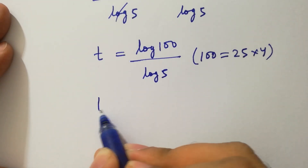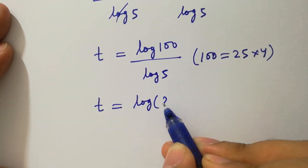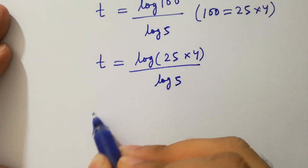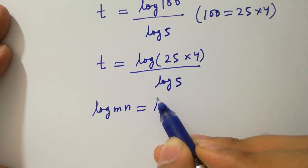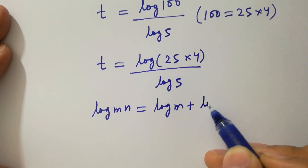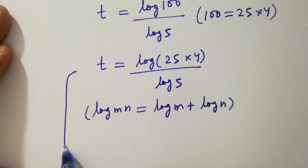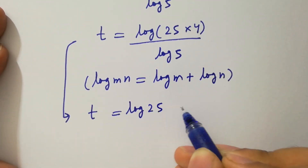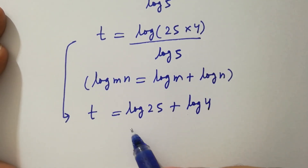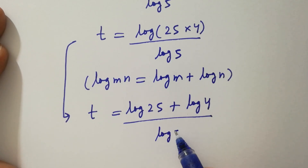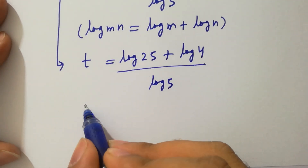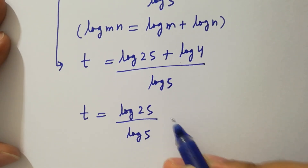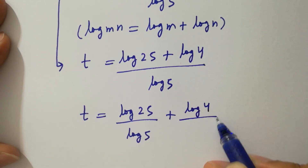Since 100 equals 25 times 4, t equals log(25 times 4) over log 5. Using the rule log(mn) equals log m plus log n, we can write t equals log 25 plus log 4, all over log 5. This splits into t equals log 25 over log 5 plus log 4 over log 5.